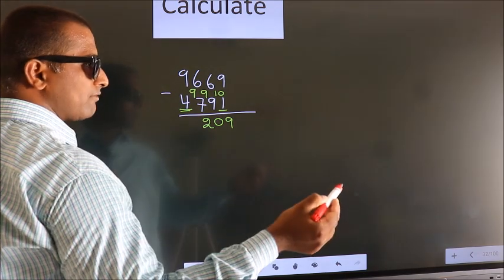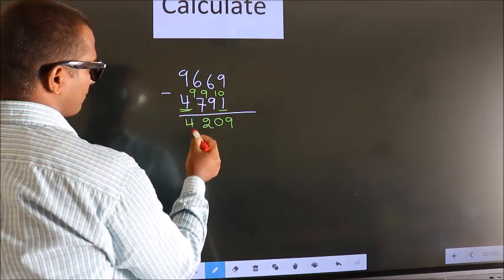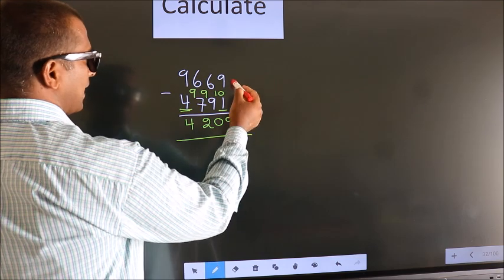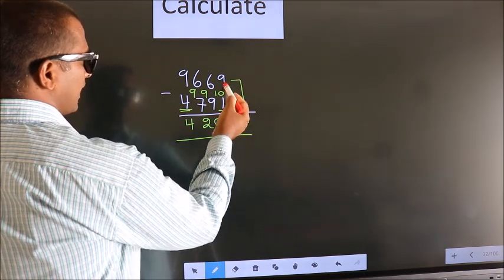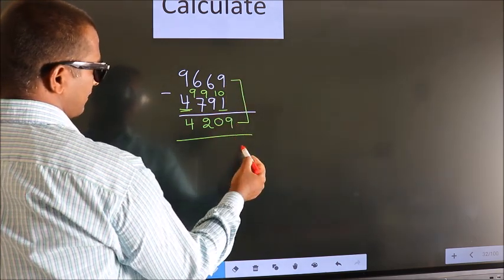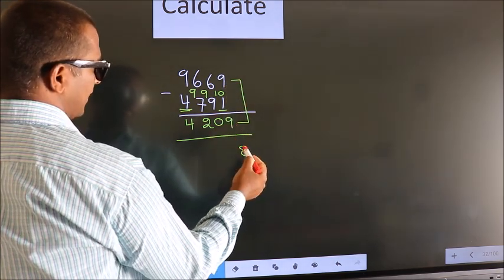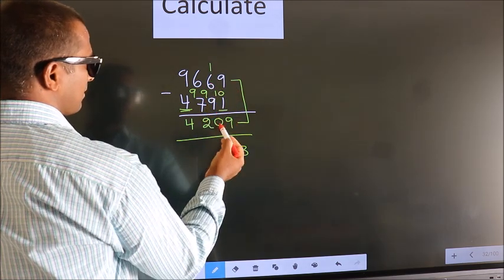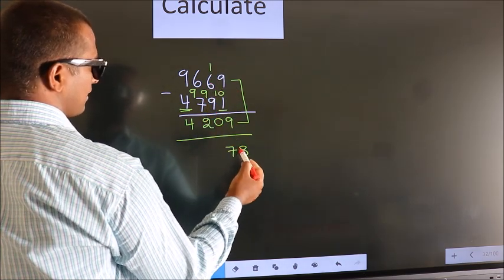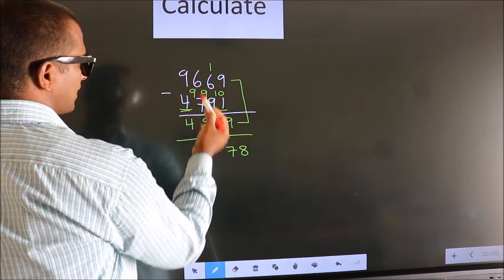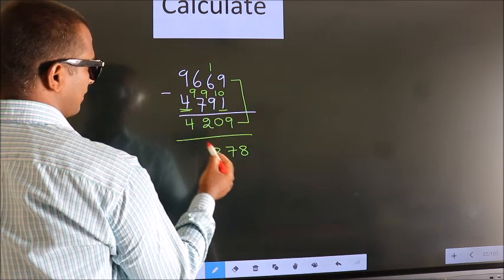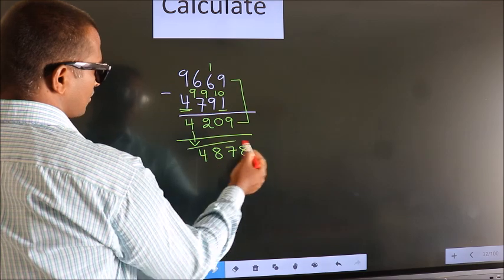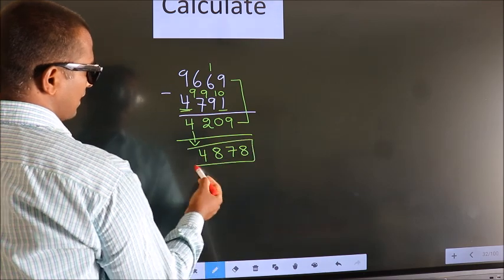Decrease more by 1, we get 4. Now add these two. 9 plus 9 is 18, so 8 here, 1 carry. 1 plus 6 is 7, plus 0 is 7. 6 minus 2 is 8. First digit as it is, we write it down. So this is our answer.